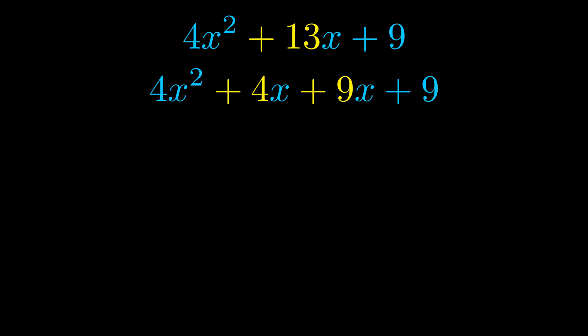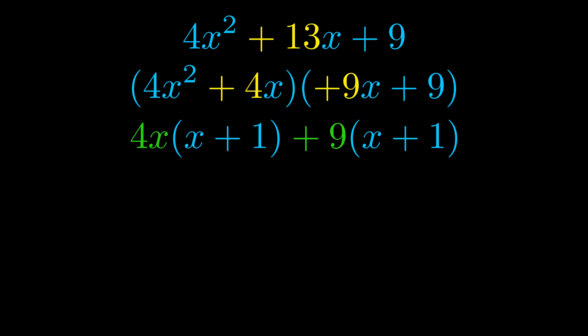Once we've done this we go ahead and we put parentheses around the first term and the last term. And we do that so that we can take the greatest common factor out of both terms. We can see the greatest common factor is now outside in green.